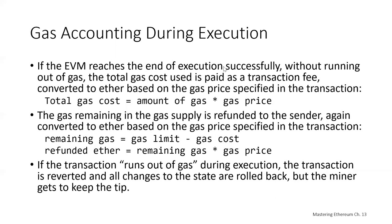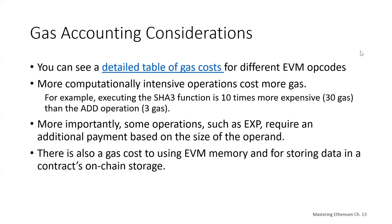If the EVM reaches the end of execution successfully without running out of gas, the total gas paid is paid as a transaction fee — either to the base fee or as a tip. The gas remaining in the gas supply is refunded to the sender, converted to ether based on the gas price specified in the transaction. If the transaction runs out of gas during execution, the transaction is reverted and all changes in state are rolled back, but the miner still gets to keep the tip.